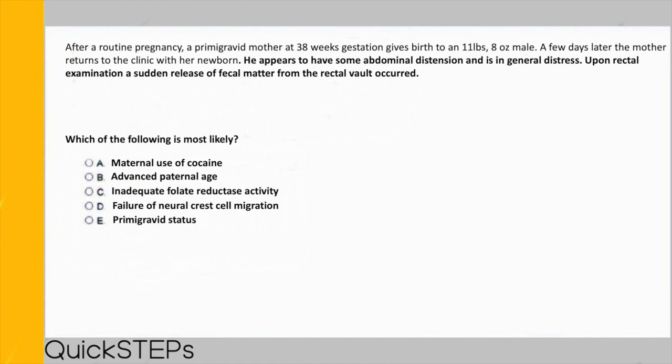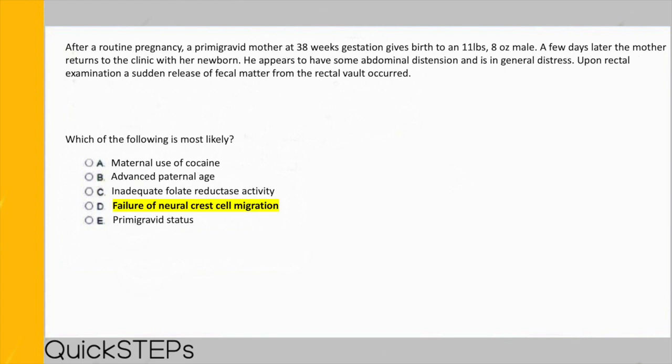We have to check if any answers back this up. You should be saying choice D — failure of neural crest cell migration. Hirschsprung's is due to a failure of neural cell-derived ganglion cell migration to parts of the colon, specifically to Auerbach's and Meissner's plexus. These ganglion cells are inhibitory in nature, so if you lack them, the affected segment of the large bowel is tonically contracted, not allowing stool to pass. On imaging, you'll see a narrow distal portion and a dilated proximal portion where stool has been building up.